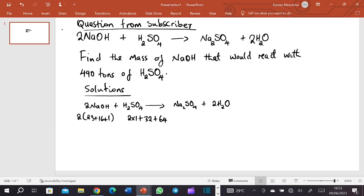So here it will come out like 2 times, if we add 23 plus 16 plus 1 it will be 40, so it will be like 2 times 40 which will give us 80. Then here when we add it will give us 98. So stoichiometrically this is what happens, this is how it reacts.